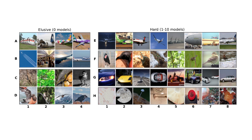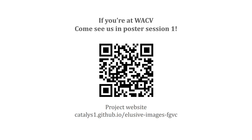To summarize, in this work we propose several metrics for analyzing the images in FGVC datasets in order to understand the kinds of challenges that modern methods are facing. We discover the prevalence of elusive and challenging images that are rarely or never correctly classified. We verify that confusion between similar classes is still a key issue in FGVC, and by looking at the most challenging images, we find certain characteristics that might contribute to the difficulty of certain images, such as unique poses, camouflage, and distractor objects. For more details, please see our paper.